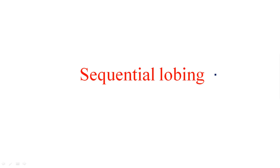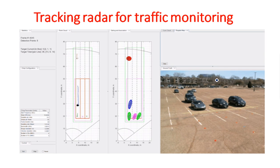In this video I am going to explain about sequential lobing. Sequential lobing is one of the methods to identify the error signal. I have already explained the error signal in the previous video, but I will go through what the error signal means first, and then I will start the sequential lobing concept.